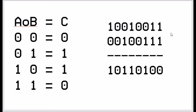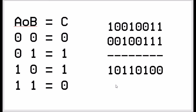If we apply that to our example: these two are the same so we get 0; these two are the same so we get 0; these two are different so we get 1; these two are the same so we get 0; these two are different so we get 1; these two are different so we get 1; these two are the same so we get 0; and these two are different so we get 1. And that is an exclusive OR.